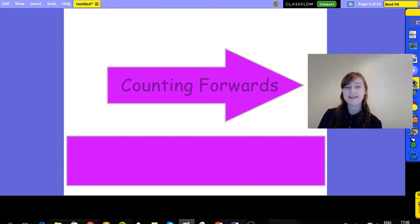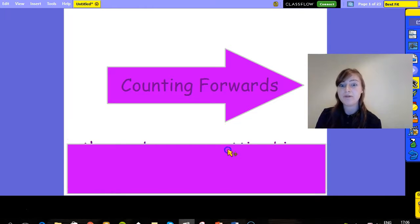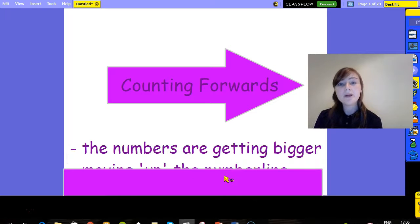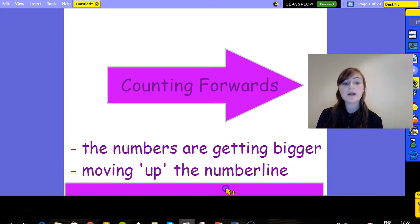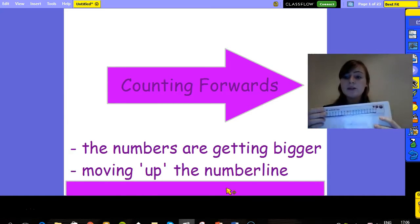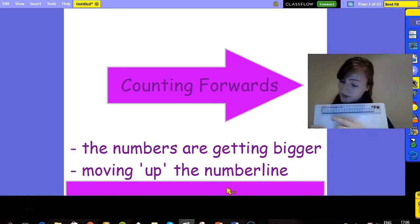Great! Let's see if you've got it all figured out. When we're counting forwards our numbers are getting bigger. We are moving up on the number line. When you use a number line you're starting at smaller numbers and moving forwards up to bigger numbers.